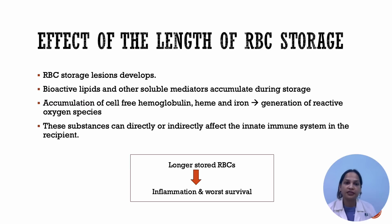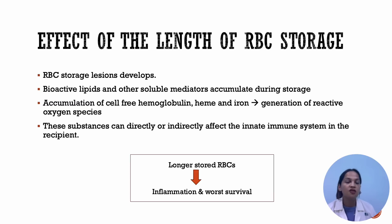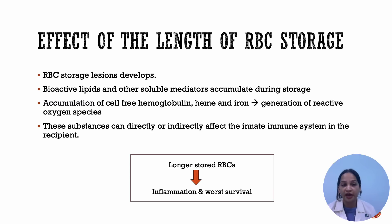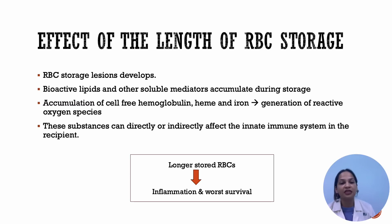Regarding the effect of the length of red cell storage: if red cells are stored for a long time, red cell storage lesions can develop. There will be reduction in pH and accumulation of lactate and other metabolites. Bioactive lipids and other soluble mediators accumulate during storage, and if there is red cell lysis, there will be accumulation of cell-free hemoglobin, heme, and iron. All these mediators can lead to the generation of reactive oxygen species and tissue damage. These substances can directly or indirectly affect the innate immune system of the patient. In short, longer stored RBCs can lead to TRIM, inflammation, and worse patient survival.